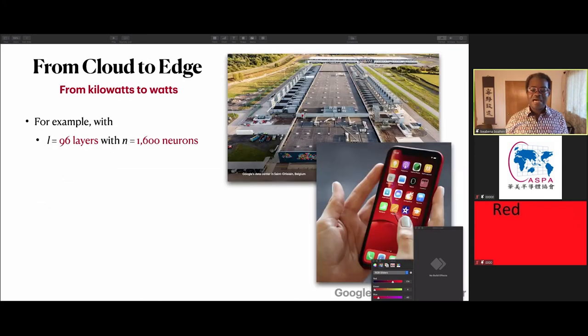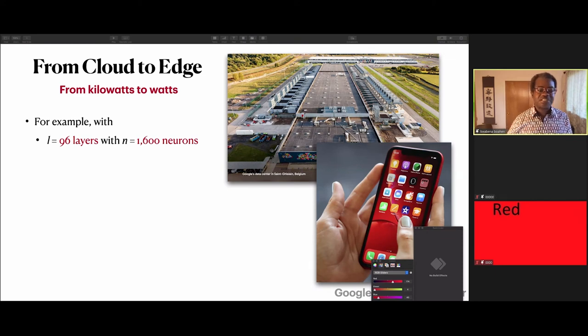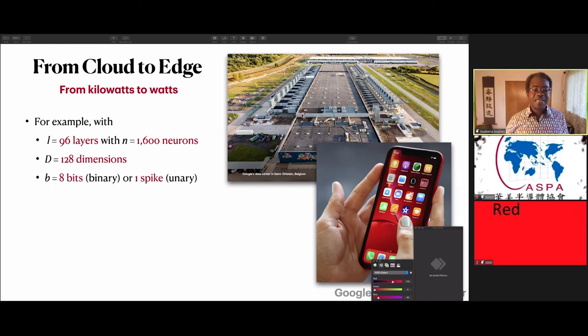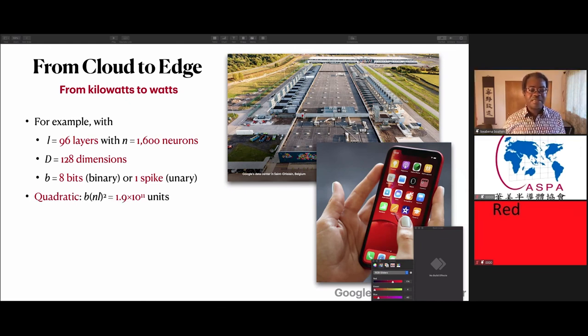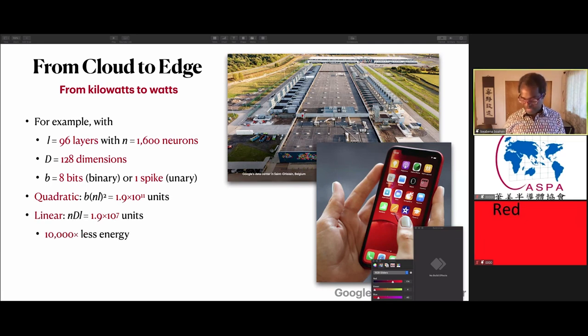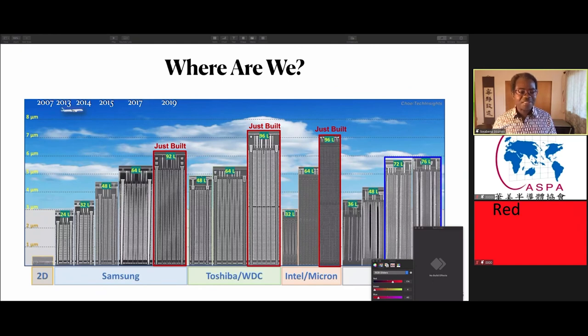That's actually enough to go from kilowatts to watts, as you see in this example. If I have 96 layers with 1600 neurons each, 128-dimensional input space, 8 bits versus one spike, or binary versus unary, I can reduce my energy by 10 to the 4, or I could now implement a network with 2 billion neurons using as much energy as 150,000 before. That's enough to run GPT-3 on something like your cell phone.